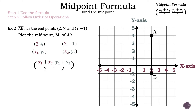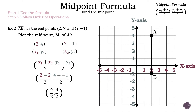Let's substitute the ordered pairs into the formula. For the X part: 2 for X1 and 2 for X2. For the Y part: 4 for Y1 and negative 1 for Y2. So we have 2 plus 2 divided by 2 and 4 plus negative 1 divided by 2. Adding the numerators: 2 plus 2 is 4, and 4 plus negative 1 is 3. We keep the denominator of 2 for both, giving us 4 divided by 2 and 3 divided by 2.